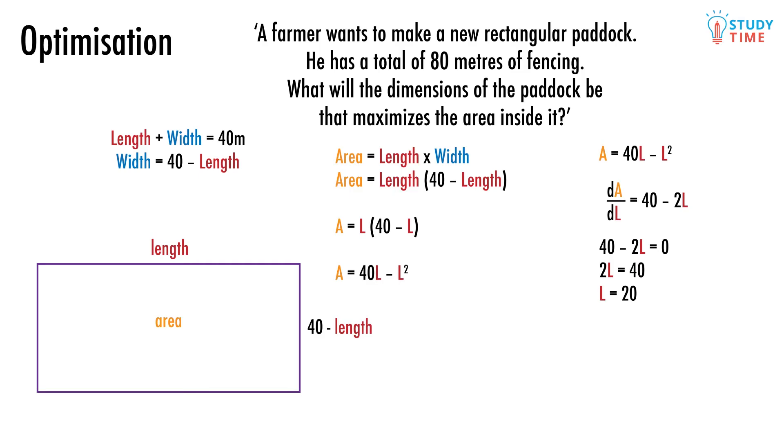Okay, so what about the width? Well, we can hop back to the width equation to help us find out what the width will be when the length is 20 meters. Width equals 40 minus 20 equals 20 meters. Great. So the width and the length are both going to be 20 meters, which means that the farmer's paddock will actually wind up being a square with an area of 400 square meters. The power of differentiation, eh?